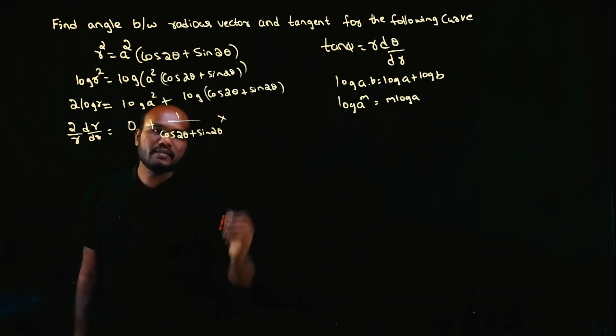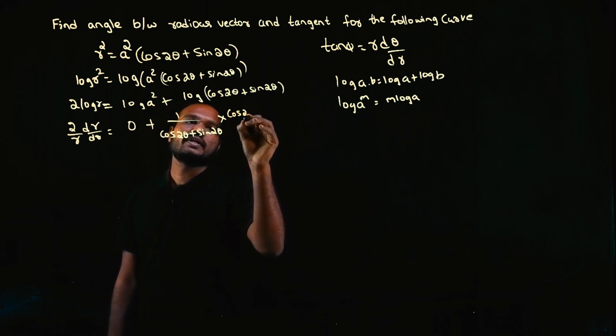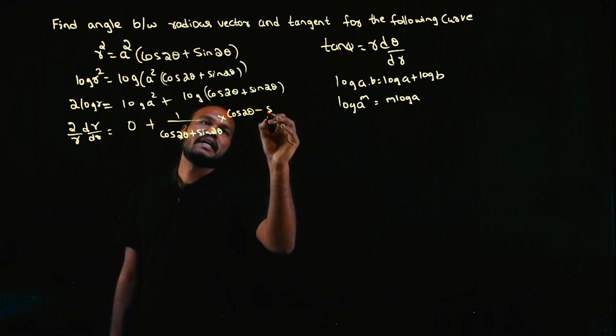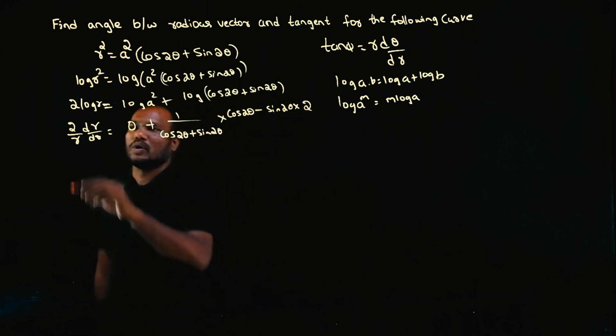First I'll differentiate sin2θ, which gives cos2θ times 2. Then cos2θ differentiation is minus sin2θ times 2. The 2s cancel out.